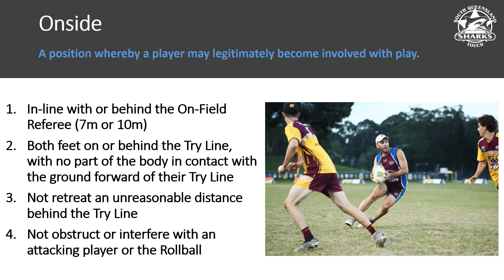Players retreating a long way back behind the try line so that they only get to it when the touch is made is not okay. It's an unreasonable distance and not in the spirit of the game. You can penalise for that, but I would suggest communicating with them first to talk them out of doing it multiple times. If they continue to ignore you and do the wrong thing, then you would blow a penalty.